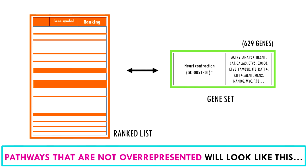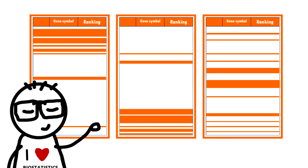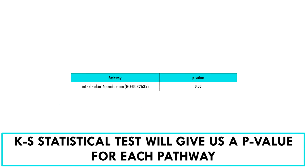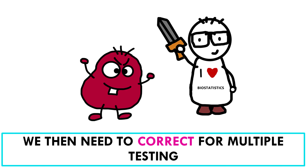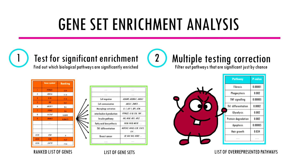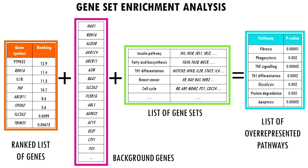Pathways that are not over-represented — for example, genes involved in heart contraction — will be evenly distributed in our list, or mostly towards the centre where non-significant genes are. Obviously we need a proper statistical test to identify which pathways show a non-random distribution across this sorted list, and the most often used is the Kolmogorov-Smirnov test. The result is basically the same as with over-representation analysis: we obtain a p-value, which we correct for multiple testing since we are testing thousands of gene ontology terms or pathways, reducing our long gene list to a manageable list of biological pathways.